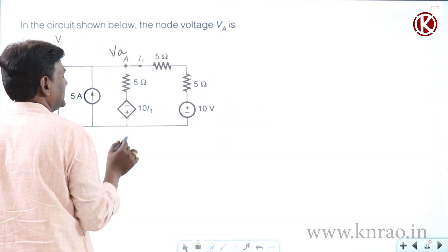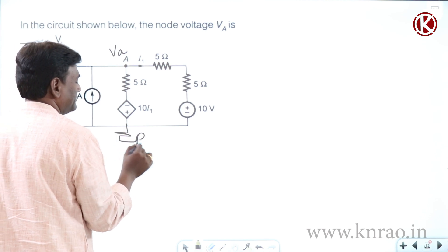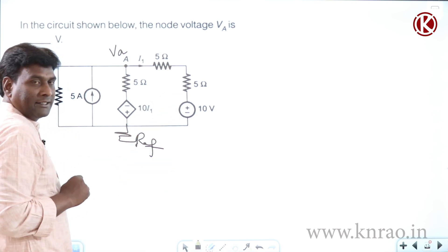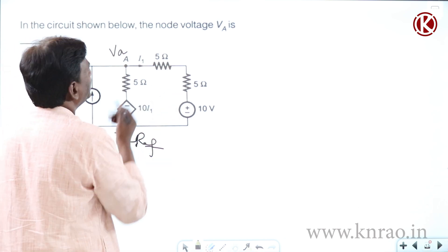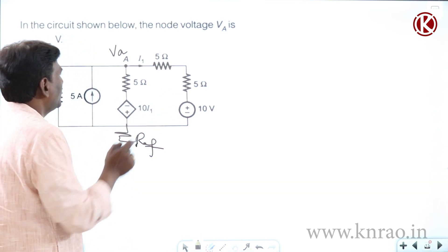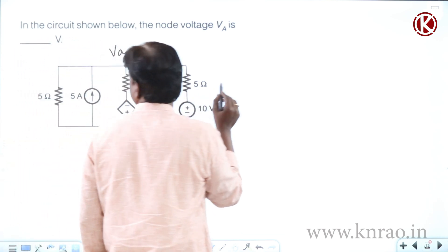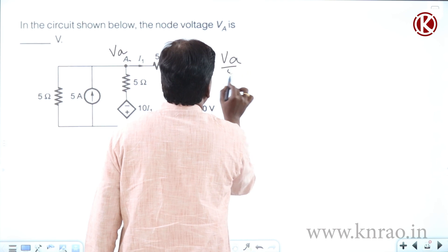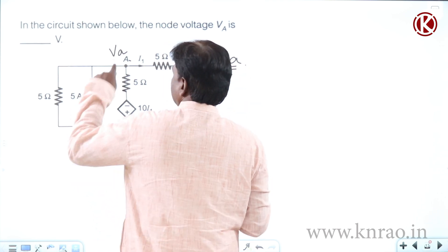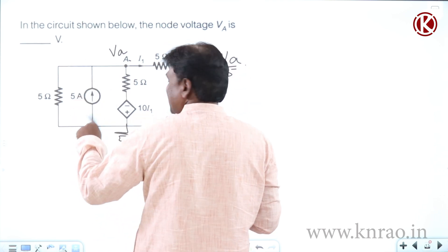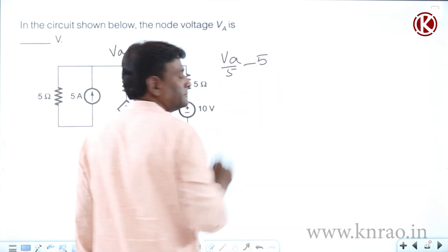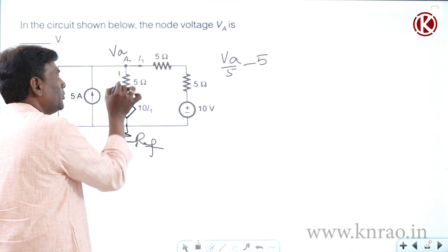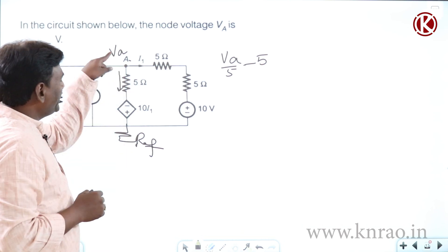So let us go with nodal analysis. This is VA and this is the reference. They are asking node voltage VA only. Now applying KCL at VA: VA by 5 is the leaving current, plus the leaving current here is minus 5, so minus 5.